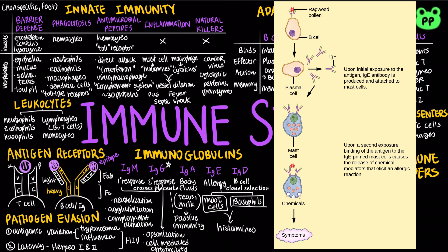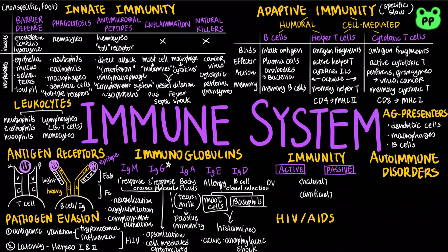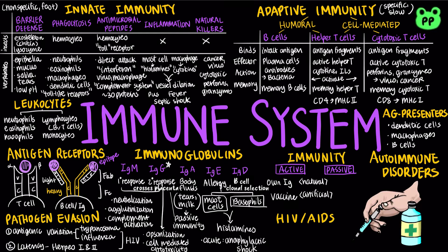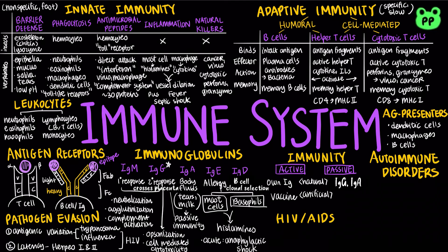Allergies are exaggerated hypersensitive responses to antigens. Anaphylactic shock refers to a severe allergic reaction that can be deadly if not treated. Natural active immunity involves the production of antibodies. Artificial active immunity develops from vaccination — the injection of a non-pathogenic form of a microbe or part of a microbe, which triggers specific immunological memory. Passive immunity provides immediate short-term protection. Natural passive immunity involves IgG, which crosses the placenta from mother to fetus, and IgA, which passes from mother to infant in breast milk. Artificial passive immunity involves injecting antibodies into a non-immune person.